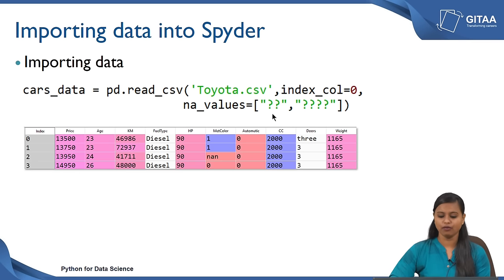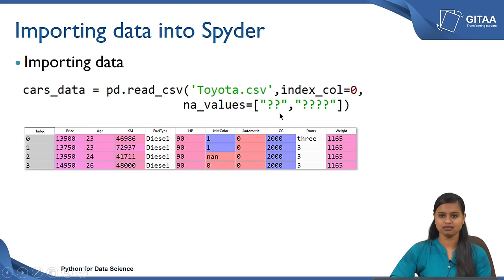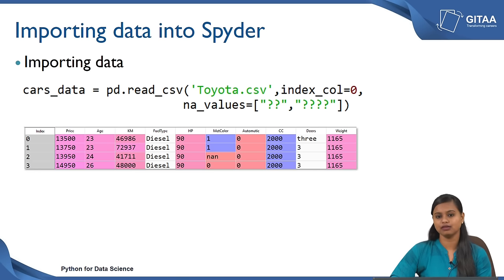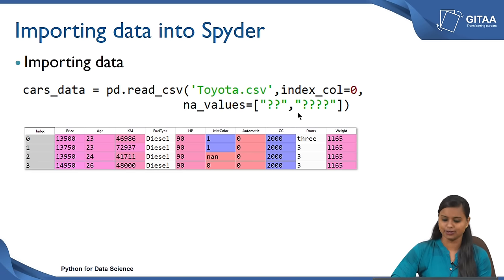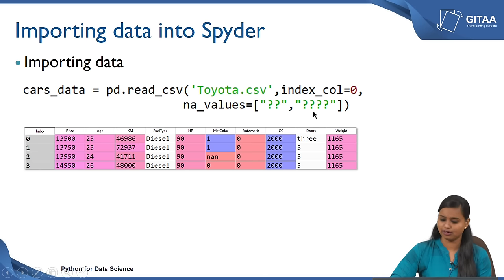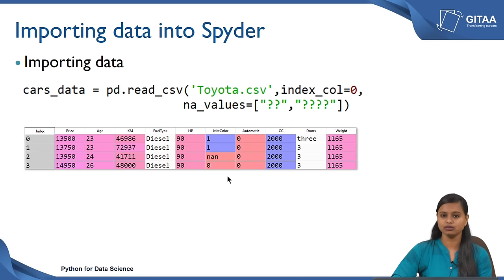Since we have already worked with this Toyota data we know that there are some missing values that are in the form of question marks. These question marks do not convey any message from the data. So we will be considering them as missing values. I have given it under na_values because I am going to consider these special strings with the default NaN values of Python, because Python offers several functions which will allow us to deal with the default NaN values. While reading itself we are considering all the question marks as NaN values so that we can perform all the operations related to missing values.